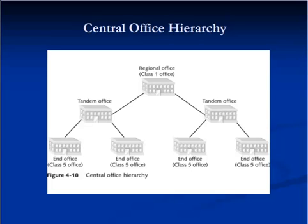A tandem office is a central office that handles calls between multiple central offices. Tandem offices are connected to each other via trunks — lines which are called trunks. A trunk is a transmission route between switches that typically has a great deal more capacity than a feeder. Tandem offices generally do not connect directly with subscriber lines; instead, they serve as an intermediary switching point for all calls that do not start and end at the same local office. Class 1 COs, a type of tandem office, are also known as regional offices, and there are only a few large Class 1 COs in the United States.